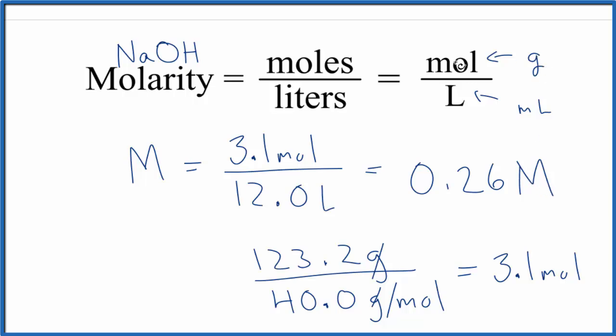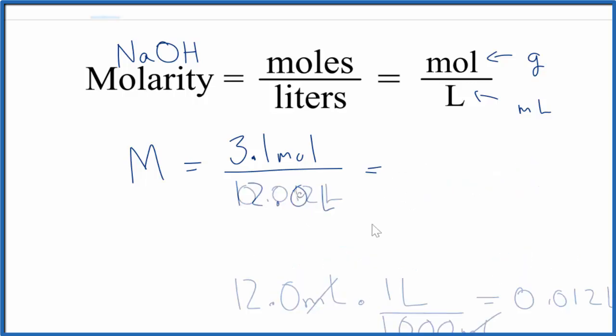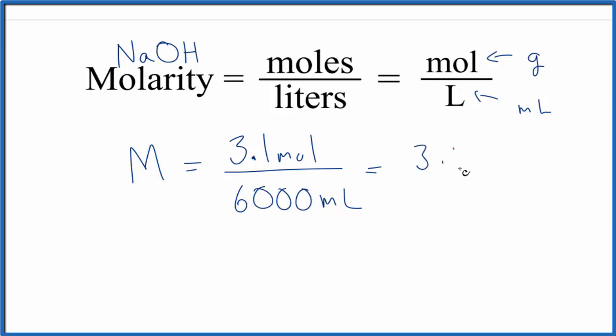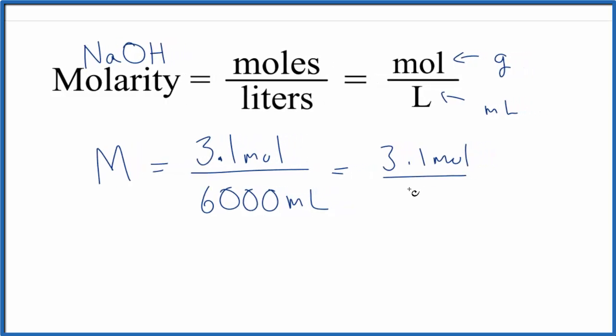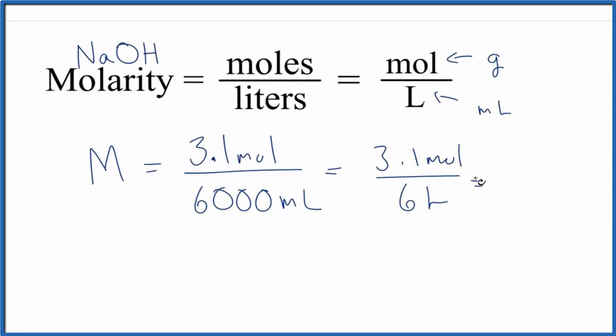If you're given grams, you've got to convert those to moles. What about liters? What if we had milliliters instead? Say we have 6,000 milliliters. We need to convert this to liters by dividing by 1,000. So we end up with 3.1 moles over 6 liters.